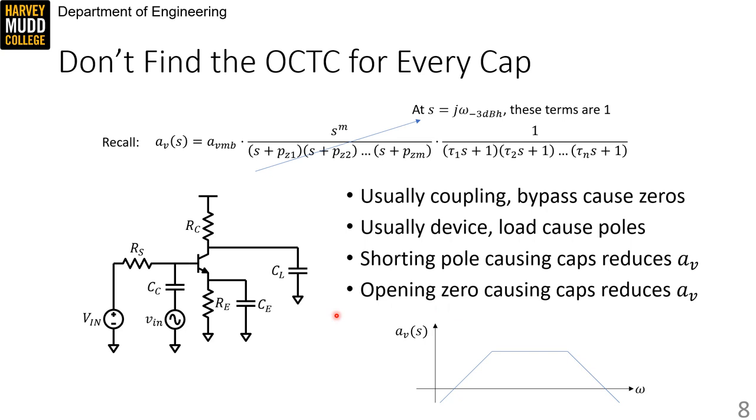On the other hand, if I replace CC with a short, that makes my gain go from zero if it's open to something mid band looking if it's shorted. So this potentially increases my gain, and therefore it can't be a high frequency pole causing cap.